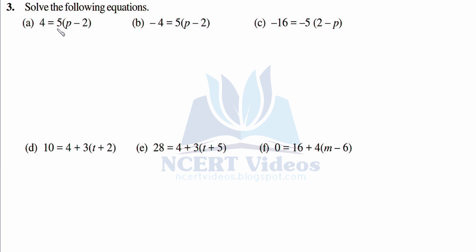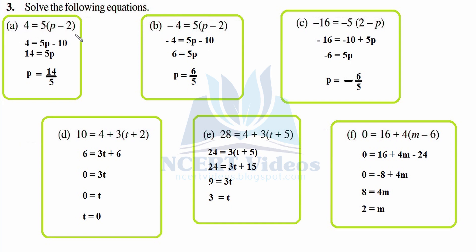Question 3: Solve the following equations. Part a: 4 equals 5 times (p minus 2). Opening the bracket: 4 equals 5p minus 10. Transpose minus 10 to the left: 4 plus 10 equals 5p, so 14 equals 5p. Divide both sides by 5, so p equals 14 over 5.